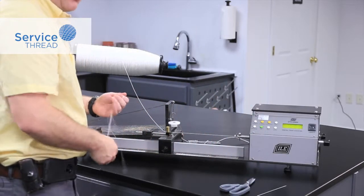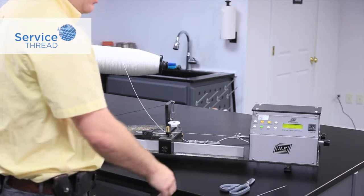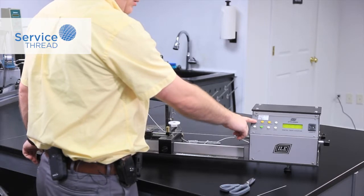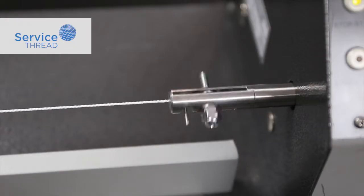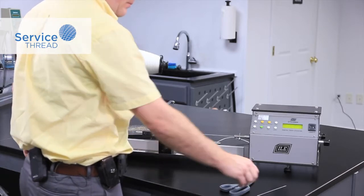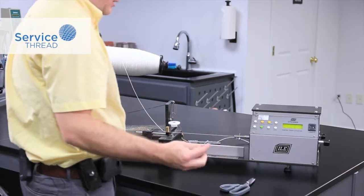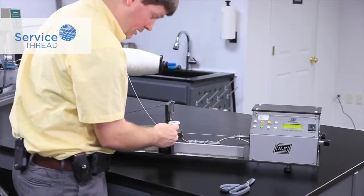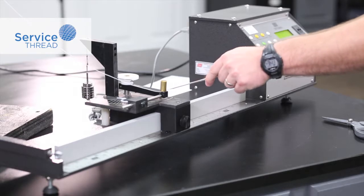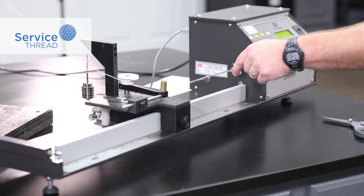This particular twist is in the Z direction. So we'll hit start and the yarn will untwist. Now we want to take our pick and separate the plies until the pick can pass cleanly from one end to the other.